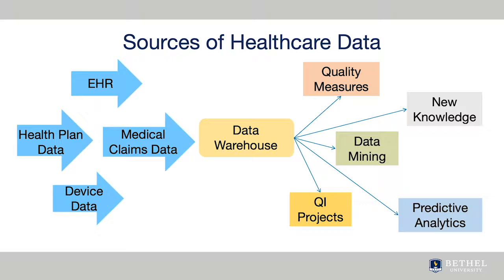Data warehouses are complex, retrospective collections of data that come from different sources. The electronic health record is one source of data generated by one or more encounters in a care delivery system, such as a group of clinics or a hospital system. This can provide data on patient demographics, medical problems, laboratory data, immunization data, and more.